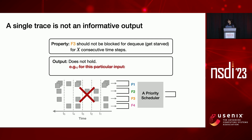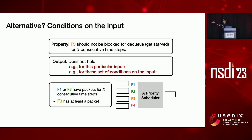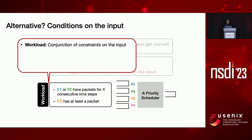We don't want to output just a single packet trace. Instead, we propose generating a set of conditions on the input that are going to lead to a performance problem in the network. For this example, the ideal output would be: if F1 or F2 — the higher priority queues — have packets for X consecutive time steps, then F3 is going to be starved. This is not a single packet trace; it's a set of conditions describing many packet traces, each of which will cause that problem. We call this a workload: a conjunction of constraints on an input that lead to a performance problem.